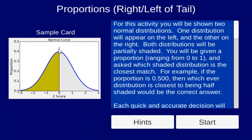In this example, half of the distribution is shaded, and so the proportion shaded would be 0.5.